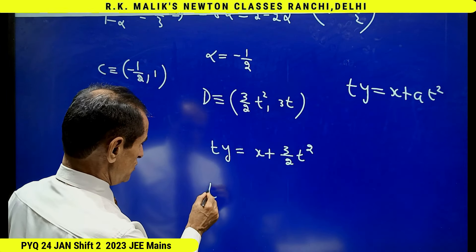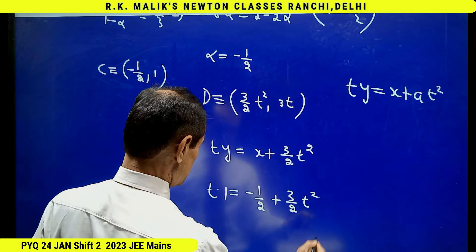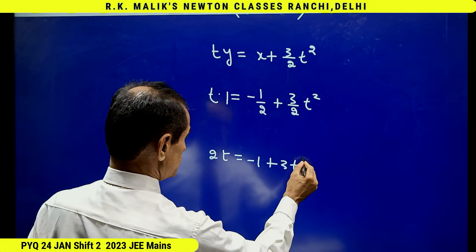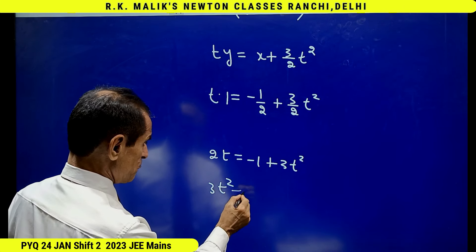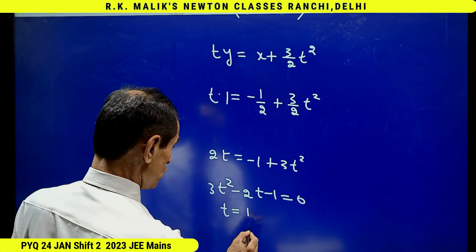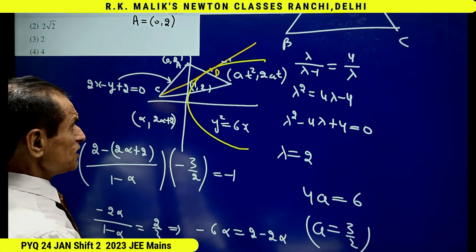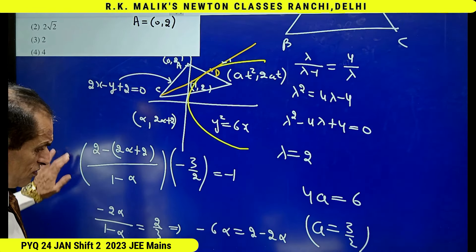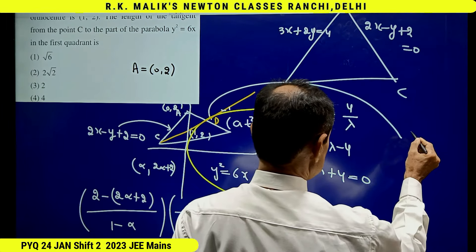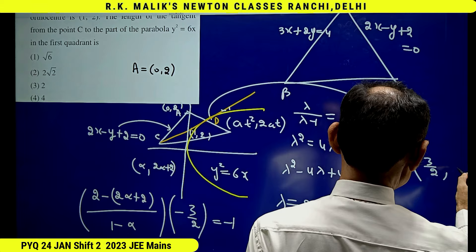Since this tangent passes through point C (minus 1 by 2, 1), substituting gives t times 1 equals minus 1 by 2 plus 3 by 2 t squared, that is 2t equals minus 1 plus 3t squared, giving 3t squared minus 2t minus 1 equals 0. This gives t equals 1 or t equals minus 1 by 3. Since point D lies in the first quadrant, t must be positive, so we select t equals 1. Therefore point D becomes (3 by 2, 3).